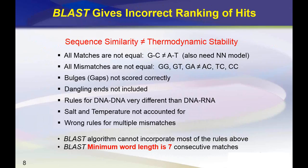Another problem is that BLAST scores all mismatches as if they're the same. BLAST does not understand that some mismatches are stabilizing — GG, GT, and GA mismatches are thermodynamically stable — versus destabilizing mismatches like AC, TC, and CC. These range over a factor of more than 1,000 in equilibrium constant, so it's a very significant effect.